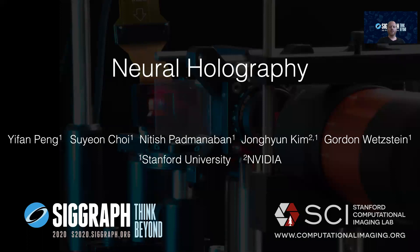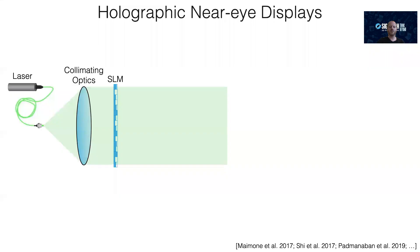Holographic NEI displays are an emerging technology promising a new generation of VR and AR systems. In a holographic NEI display, a laser emits coherent light that propagates to a spatial light modulator.